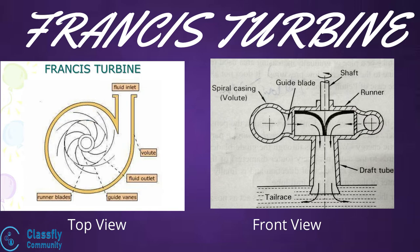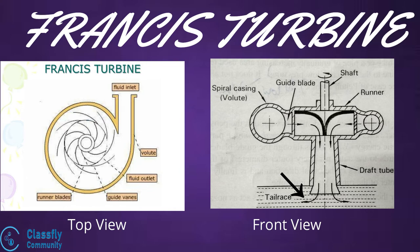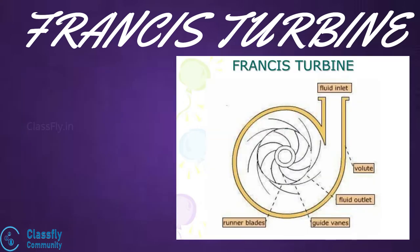The guide blades are designed to produce a nozzle effect when water flows between them. Next, the spiral casing is the closed path surrounding these guide blades. Finally, the draft tube is a pipe used to discharge water from the exit of the turbine to the tail race.